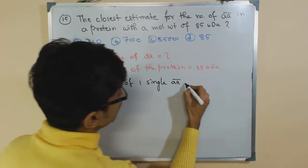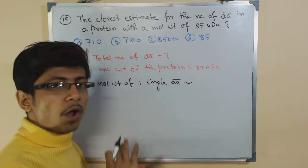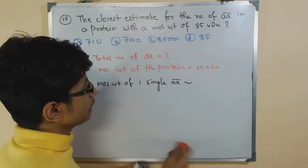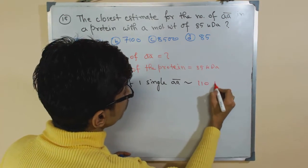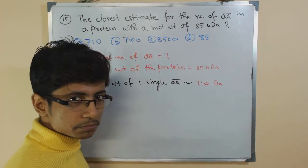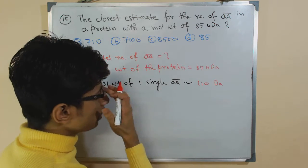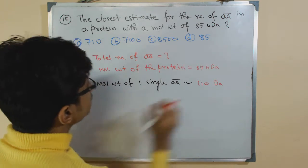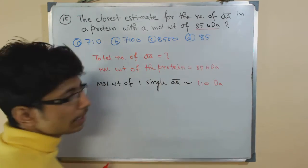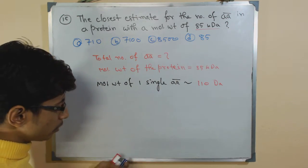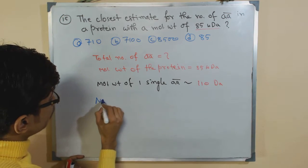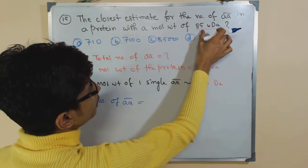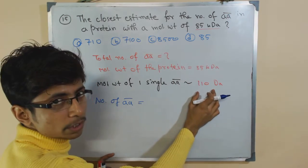For one amino acid, the molecular weight will be 110. In this case, it is consisting of 85 kilodalton. The calculation: the number of amino acids present equals the total molecular weight divided by the single molecular weight of the amino acid.